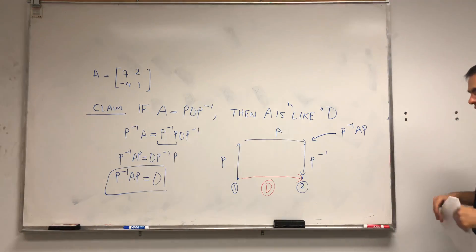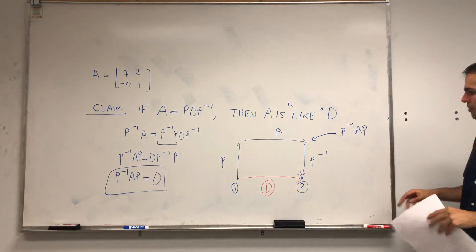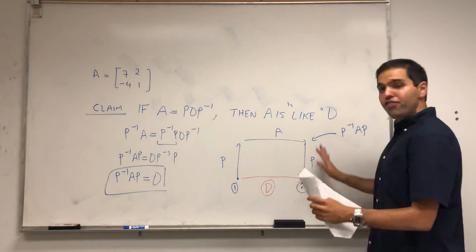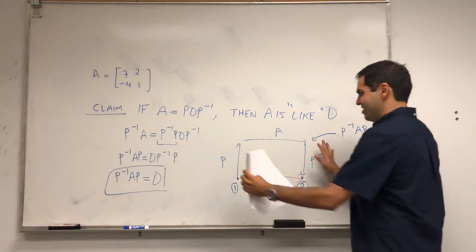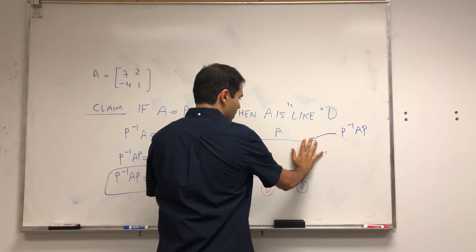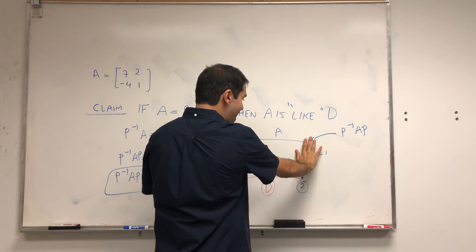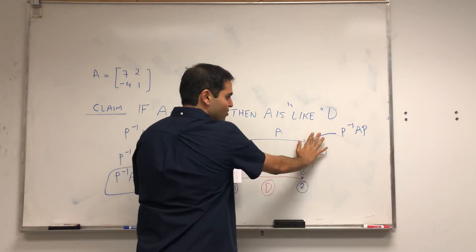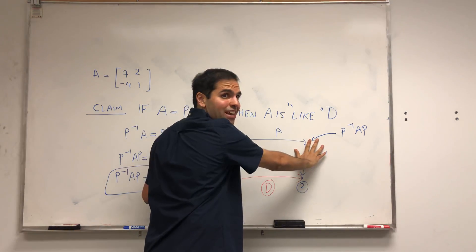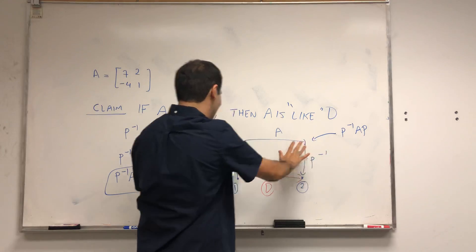And so in particular, if you ignore the vertical things here, P and P inverse, which are invertible anyway so it doesn't really matter, then in fact you get A equals D. And that's why I'm claiming that A is similar to D.